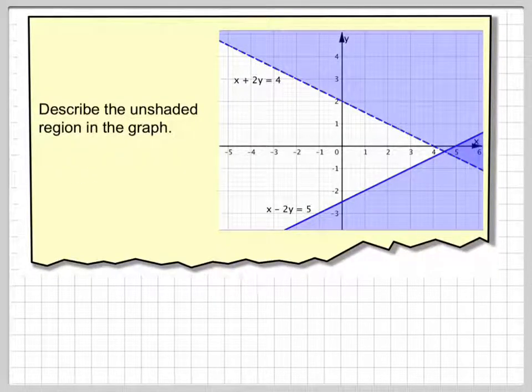Describe the unshaded region in the graph. So what we've got here is a graph with a dashed line which says x plus 2y is equal to 4 and a line here which is x minus 2y is equal to 5 and we've got to describe this unshaded region using inequalities.